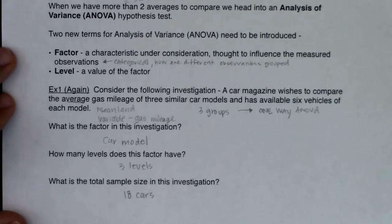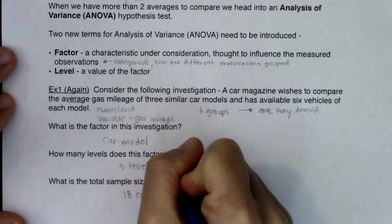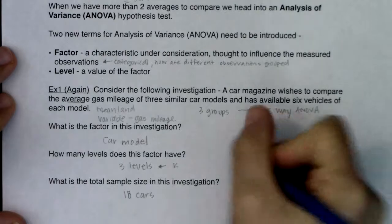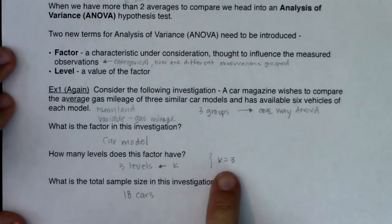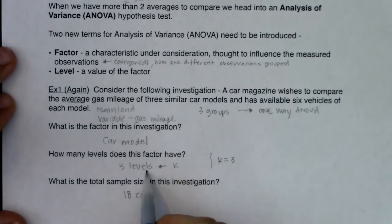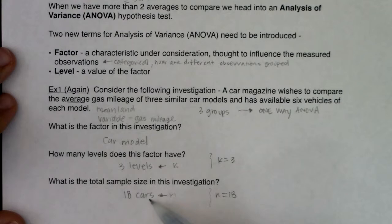So we're going to assign a couple of letters to these new vocab terms. So whenever you hear factor, we're going to call that letter K. So in this example K would equal three. So that's one of the numbers that you got to keep track of, we got to keep track of the number that's associated with our factor. So the factor itself is a word, but the levels, we go with K equaling three. Now total sample size, sample size has always been N, it's still N in this case. So we have N equaling 18 here. So the levels of the factor are assigned the letter K, and the total sample size from all of the groups gets the letter N.